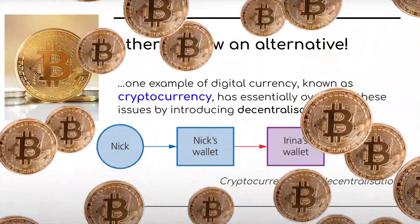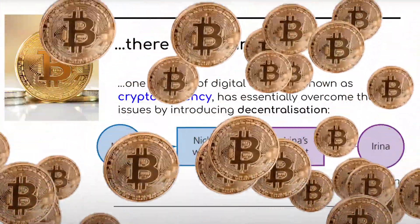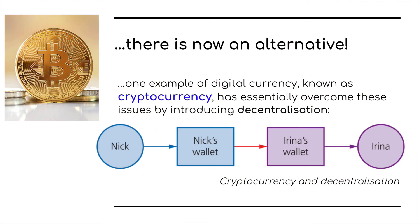This leads nicely onto the next part and the reason why central banks are producing these digital currencies — there is now an alternative. One example of digital currency known as cryptocurrency has essentially overcome these issues by introducing decentralization. It removes the need for a bank or a central banking system. For example, Nick now has an online wallet instead of a bank account, and so does Arena, and they can simply do a transaction directly between the two wallets.